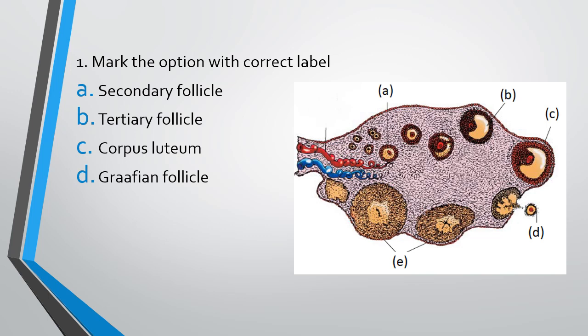The correct answer is option B. The B represents the tertiary follicle. A is actually the primary follicle, B is the correct answer representing the tertiary follicle, C is the Graafian follicle, D is the ovum that has been released, and E represents the corpus luteum.